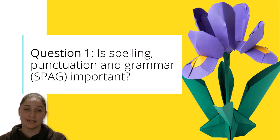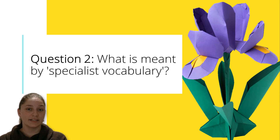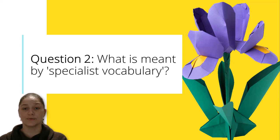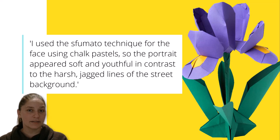Regarding question 1, spelling, punctuation, and grammar are not assessed as part of this qualification. Specialist vocabulary are words used by the candidate to describe the media and medium used to create the work, the technique and processes used to create the work, the subject matter and composition referring to the formal elements: line, shape, space, form, tone, texture, pattern, and colour.